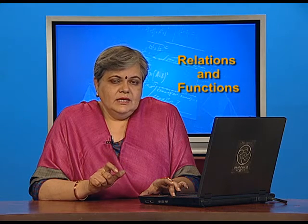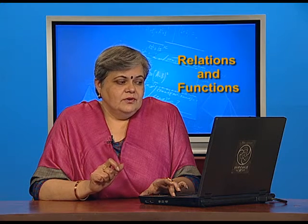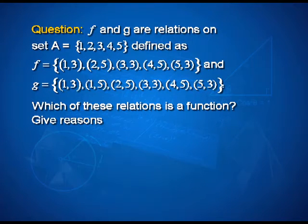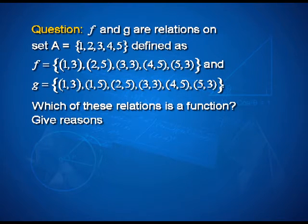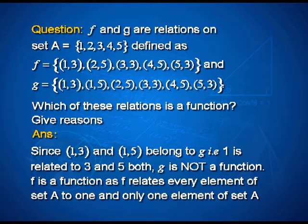Keeping the definition in mind, all elements of set A must be uniquely related to elements of set B. In F, looking at the ordered pairs: 1 maps to 3, 2 maps to 5, 3 maps to 3, 4 maps to 5, 5 maps to 3 — no element in the first position is connected to more than one element in the second. In G, however, both (1,3) and (1,5) belong to G, meaning 1 is related to both 3 and 5. Therefore G is not a function, whereas F relates every element of set A to one and only one element and therefore F is a function.